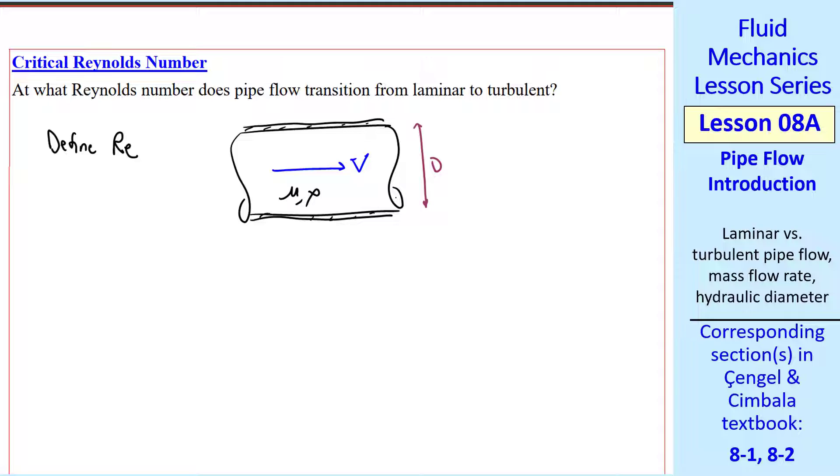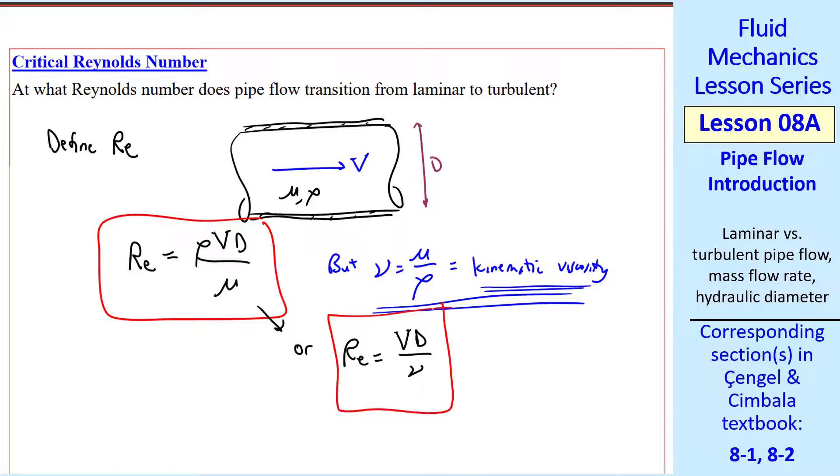The outer diameter has nothing to do with the flow. We define our Reynolds number as rho vd over mu, but recall from a previous lesson that nu is the viscosity over rho, which we call the kinematic viscosity. So a simpler expression for Reynolds number is vd over nu.